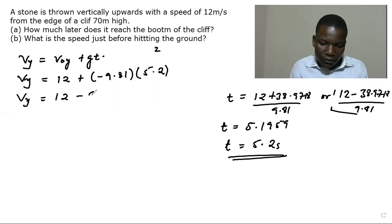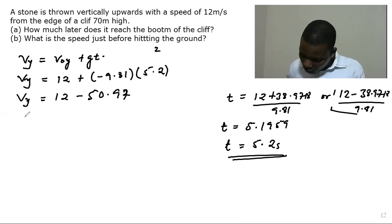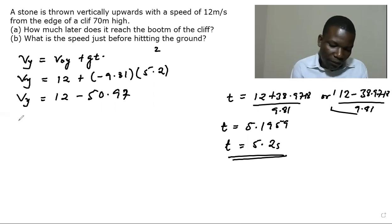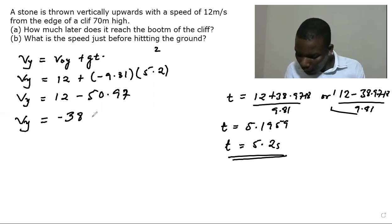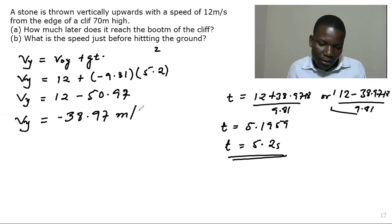And then once we do the calculation, we have our final velocity to be negative 38.97 meters per second.